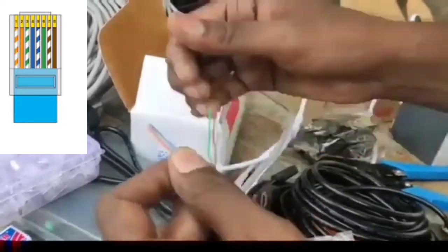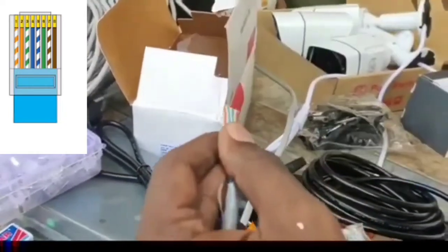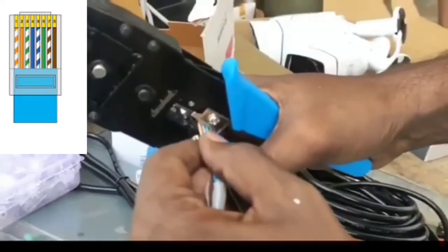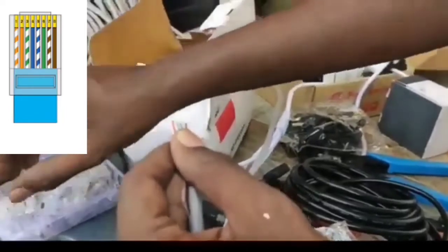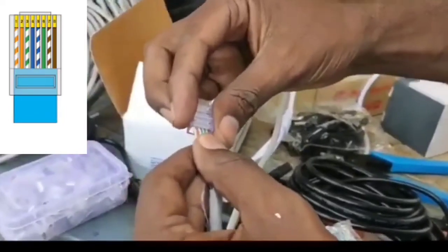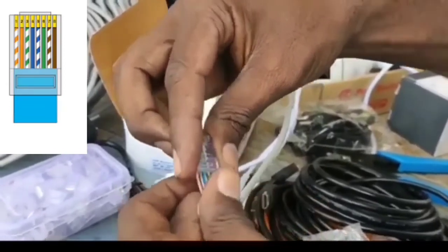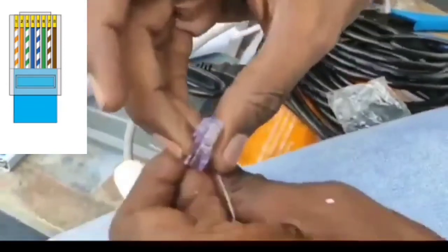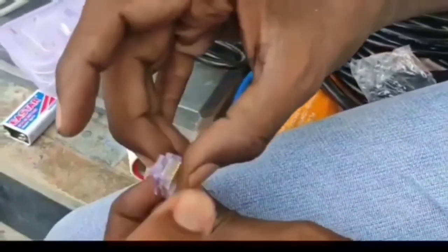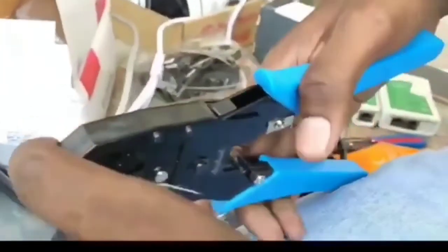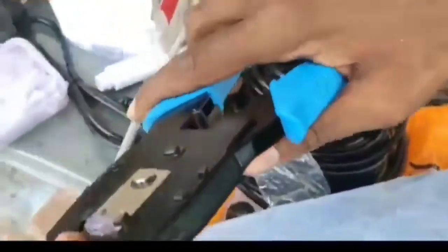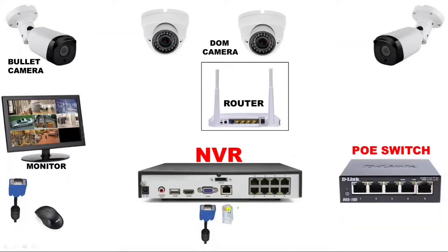In each color pair, we have two wires — one with striping, known as the stripe wire, and one plain wire, known as the solid wire. The color code sequence is: 1st orange stripe, 2nd orange solid, 3rd green stripe, 4th blue solid, 5th blue stripe, 6th green solid, 7th brown stripe, 8th brown solid. You must connect the CAT6 cable in this sequence and then clamp the RJ45 connector.